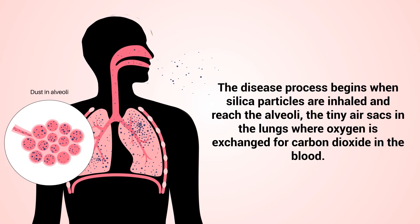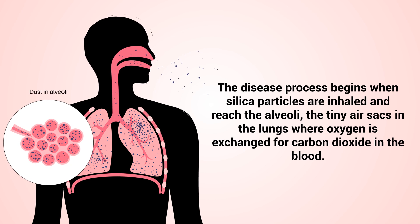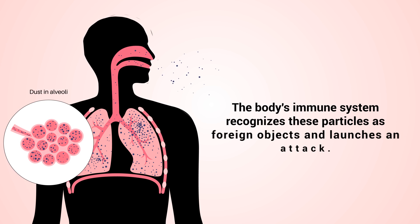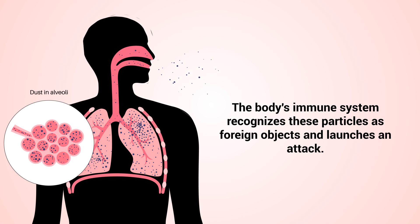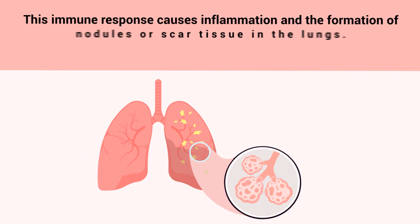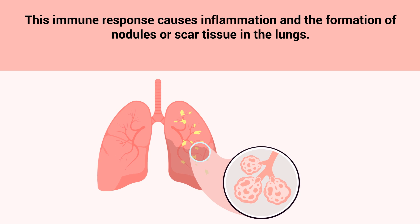The disease process begins when silica particles are inhaled and reach the alveoli, the tiny air sacs in the lungs where oxygen is exchanged for carbon dioxide in the blood. The body's immune system recognizes these particles as foreign objects and launches an attack. This immune response causes inflammation and the formation of nodules, or scar tissue, in the lungs.